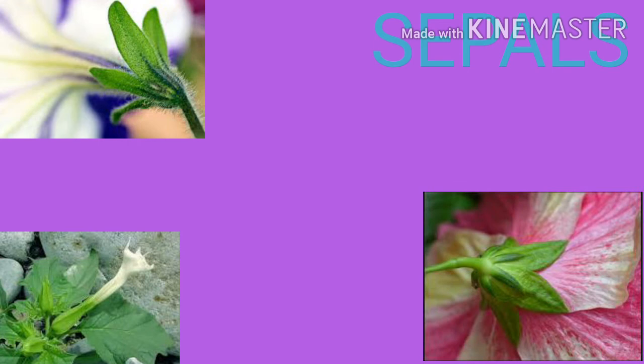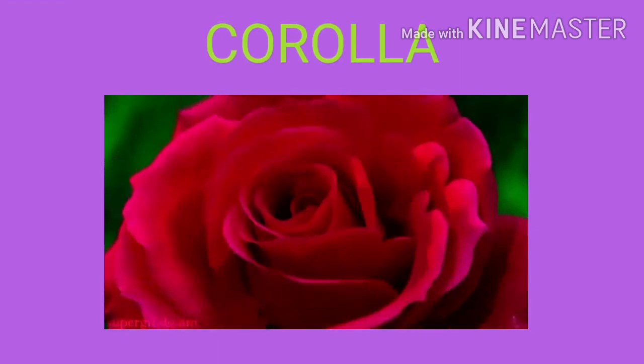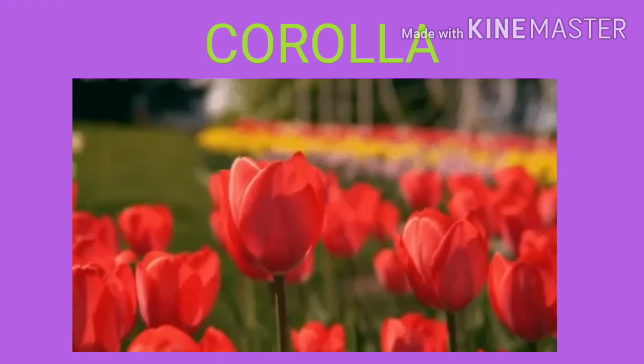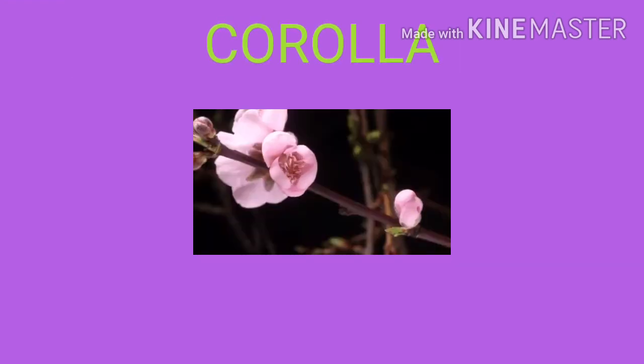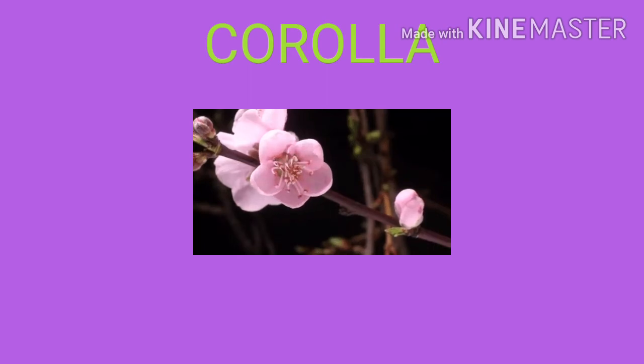Coming to the general description of the floral parts — sepals are usually green and leaf-like structures. They may be free or fused. When sepals are green in color, they perform photosynthesis. Corolla is brightly colored and scented to attract the insects for cross pollination.